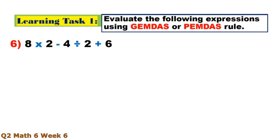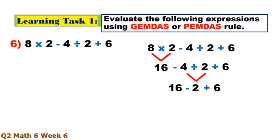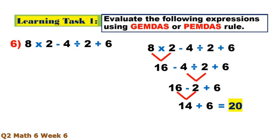Number 6. Multiplication first: 8 times 2 equals 16. Then division: 4 divided by 2 equals 2. Then subtraction and addition: 6 minus 2 equals 4, plus 16 equals 20.